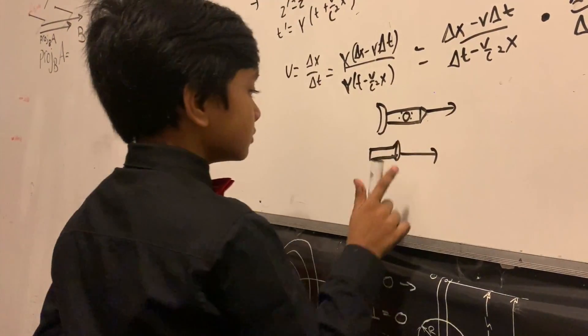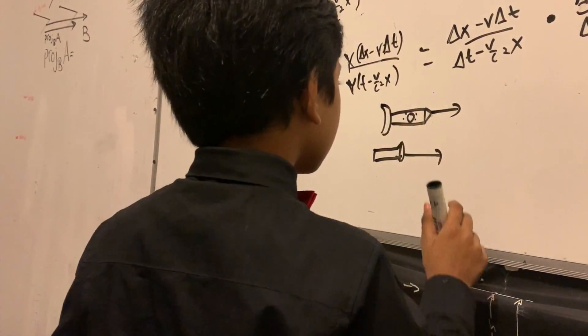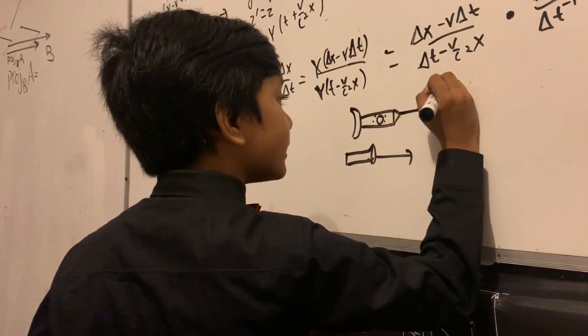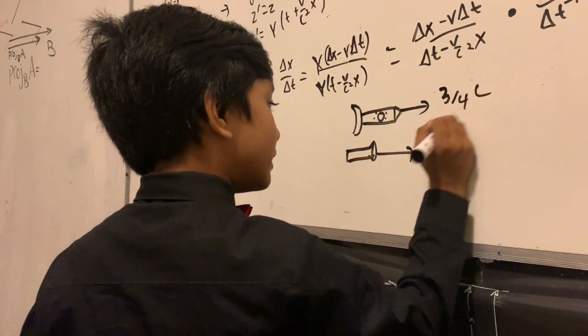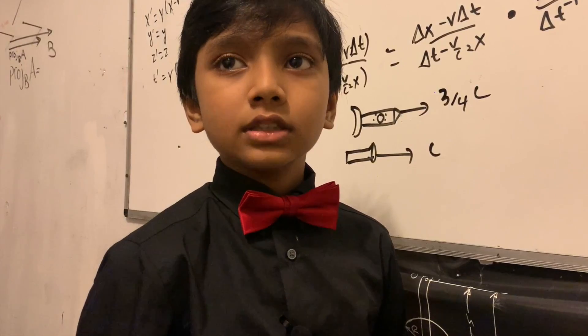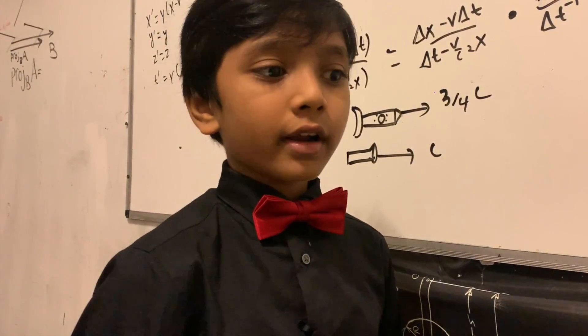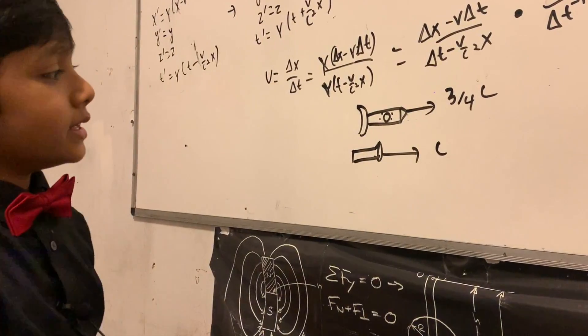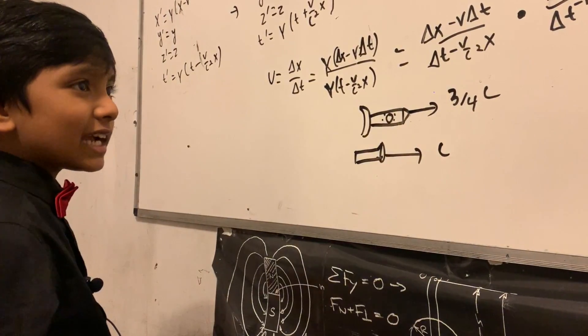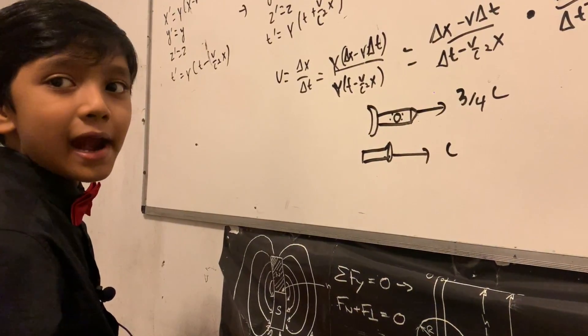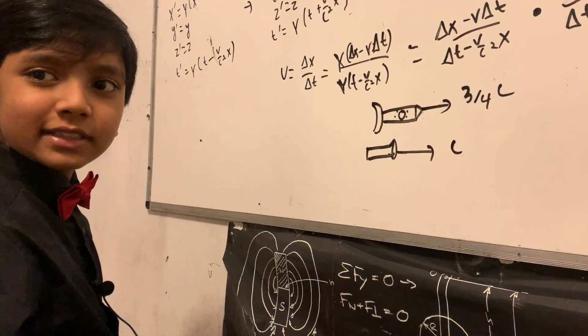Now this will be equal to... so this rocket is going to go at three-fourths the speed of light, and this light is going to be equal to c. So now the question is, for an observer on the ground, what is the average velocity of this rocket? Well, it's kind of complicated.